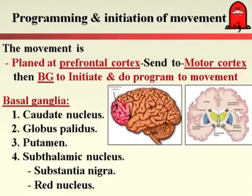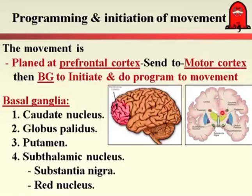To summarize: the function of the extrapyramidal system is programming and initiation of movement. To get programming of impulse, we should have a plan starting in the prefrontal cortex. This plan is first sent to the motor cortex and precentral gyrus, and from the precentral gyrus it is sent to the basal ganglia. After forming a program for this movement, it is sent back to the cerebral cortex and descends downward through the pyramidal system to produce movement of the body.